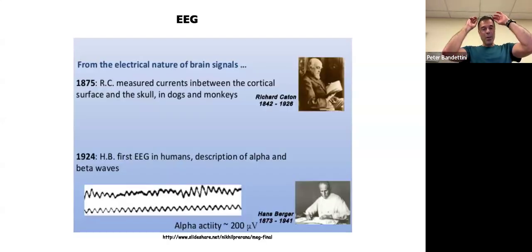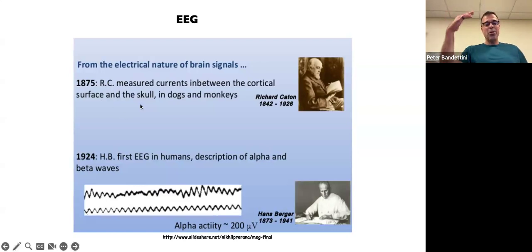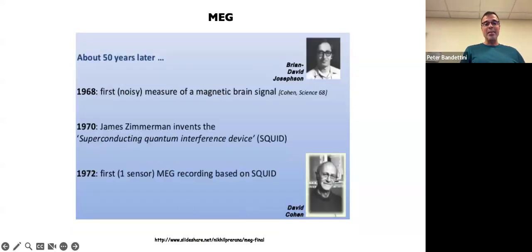All right. Electrophysiologic imaging. Once again, it all starts sort of in the late 1800s. Richard Caton measured currents between cortical surface and the skull. It was sort of invasive. In 1924, Hans Berger developed EEG in humans, first characterized alpha and beta waves. Alpha waves are related to being relaxed. Beta waves is more relaxed, I believe. And there's other things like that. So they were able to detect electrical activity at the surface of the skull.